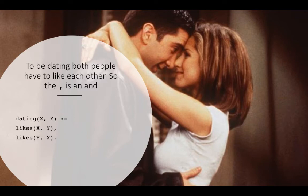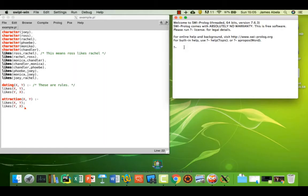To be dating both people have to like each other. So the comma is an and. So in this case we put dating, and slash likes, and like so they both got to like each other. Let's have a look at that now. Right I've put that in.